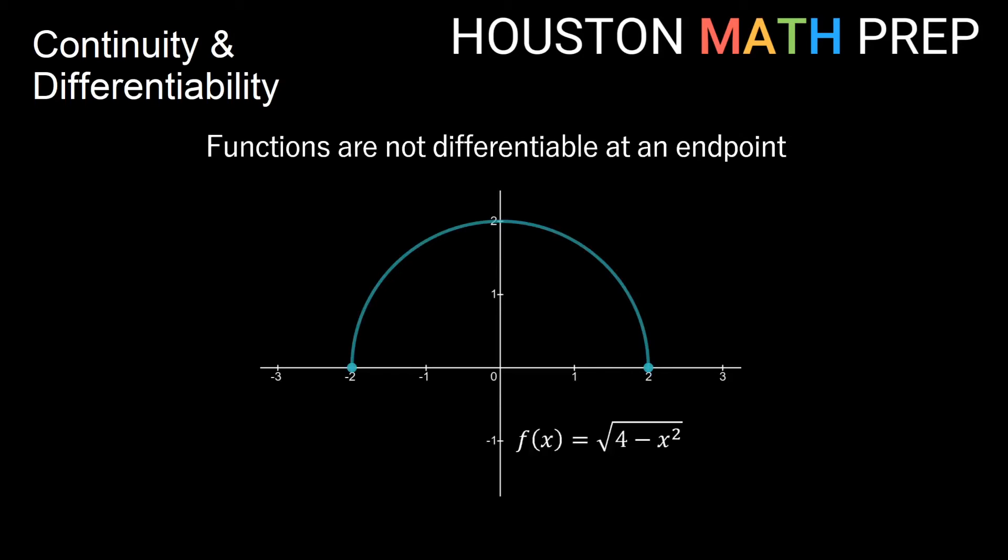Functions are also not differentiable at an endpoint. A similar thing with imagining what's going on at the ends here. I could draw many, many tangent lines through this endpoint here. Here we have an upper semicircle. We have y equals the square root of 4 minus x squared. What you'll notice about this is that it is definitely continuous on the interval negative 2 to 2, including its endpoints.